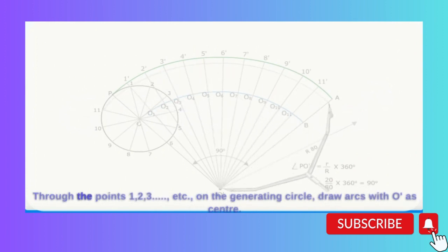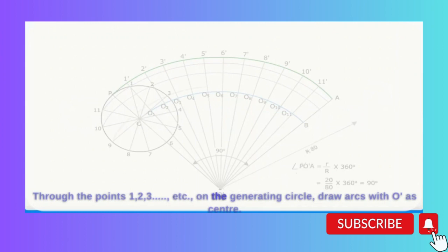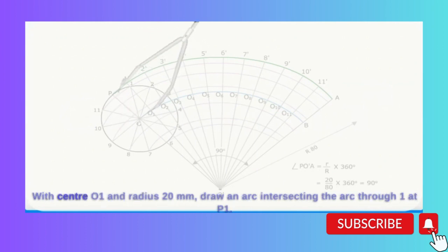Through the points 1, 2, 3, etc. on the generating circle, draw arcs with O' as center. With center O1 and radius 20 mm, draw an arc intersecting the arc through 1 at P1.